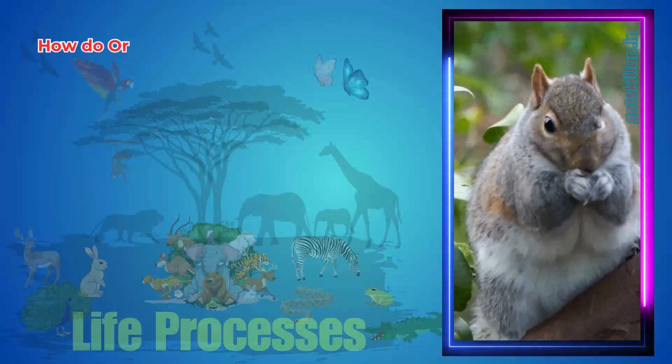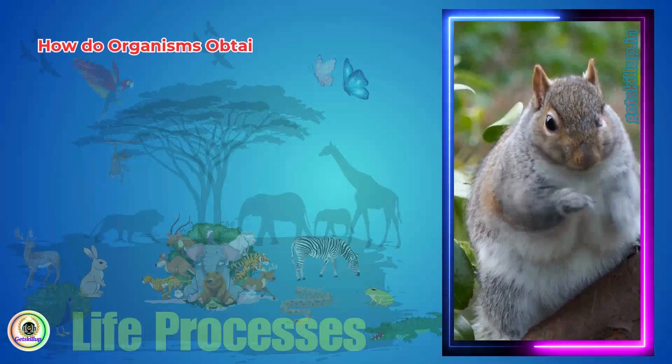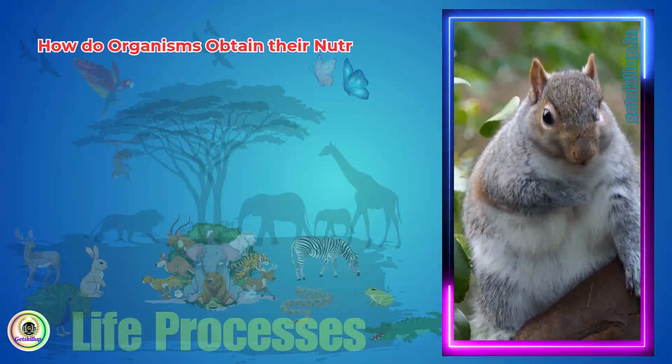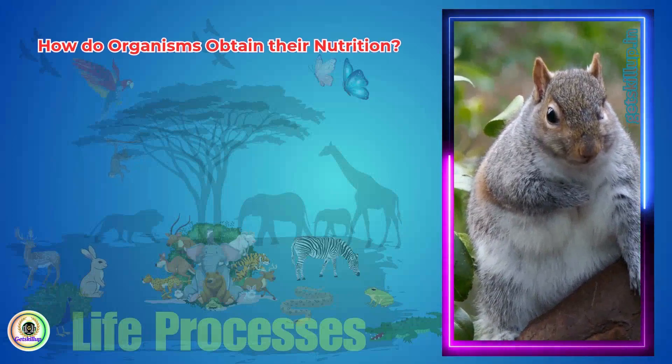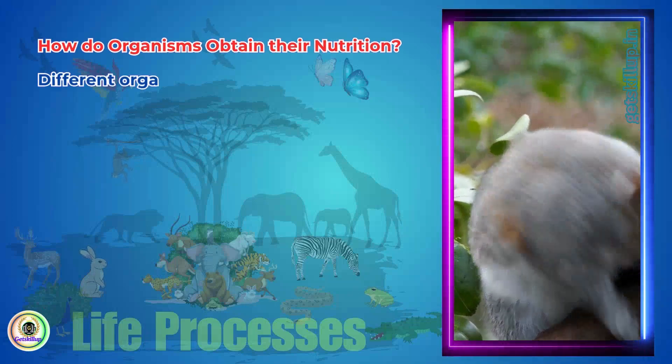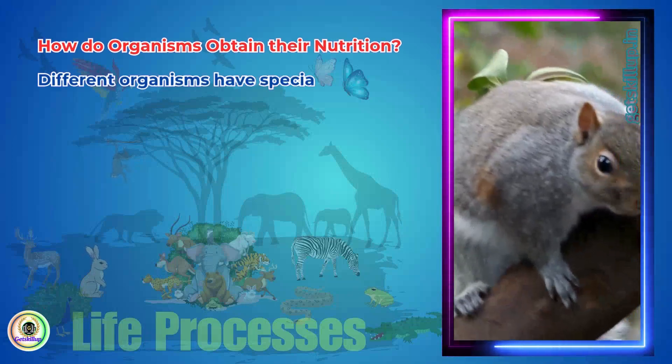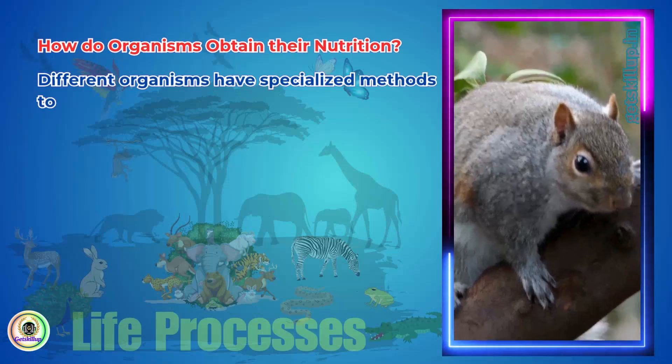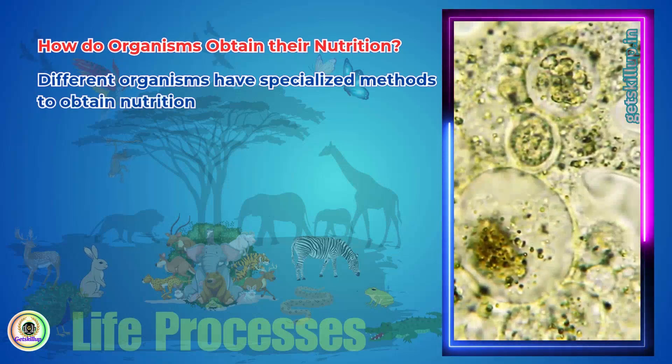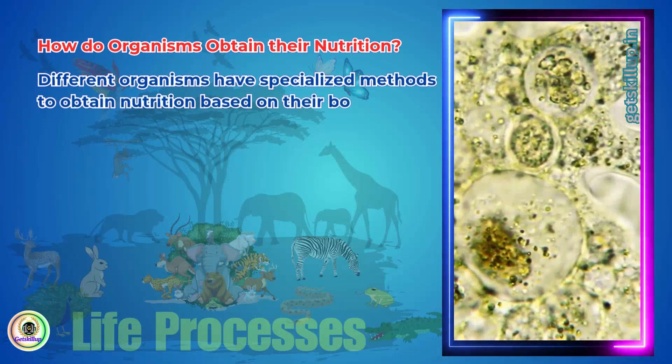How do organisms obtain their nutrition? Different organisms have specialized methods to obtain nutrition based on their body structure and environment. The way food is ingested and digested varies across species.